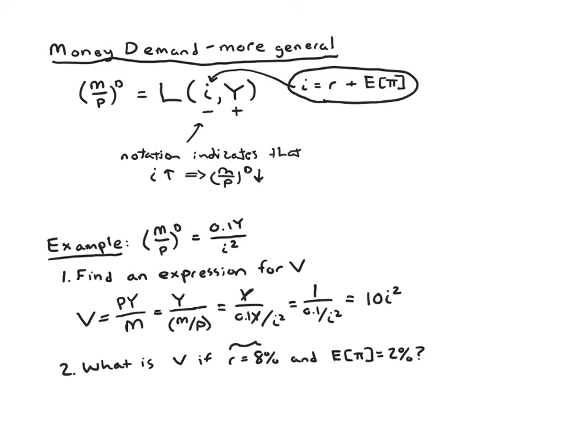So our starting point is to notice R is 8%, which means we want to plug in 0.08 for R. Sometimes we will plug in 8, and then you'll get a number that's different by often two orders of magnitude or more. So you don't want to make that mistake. And we have expected inflation is 2%, so that means expected inflation is 0.02. All right, so we know velocity is equal to 10 times I squared, and I is R plus expected inflation. So we can plug that in, 0.08 plus 0.02 squared.